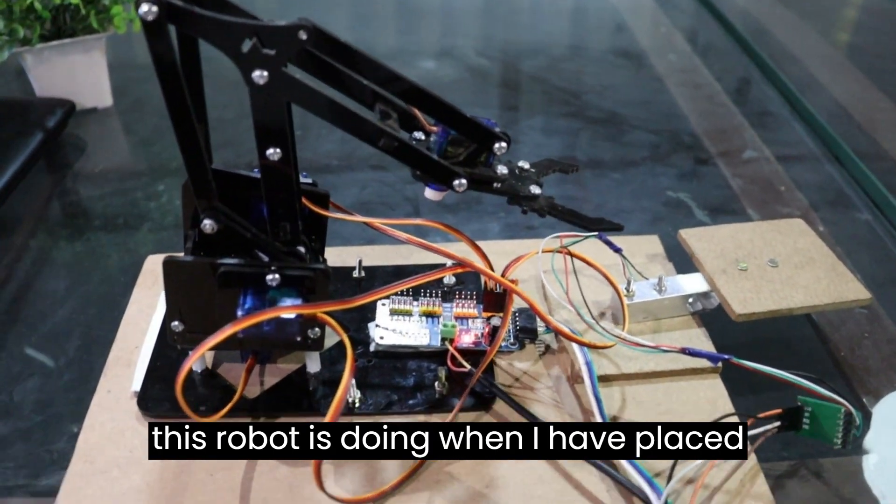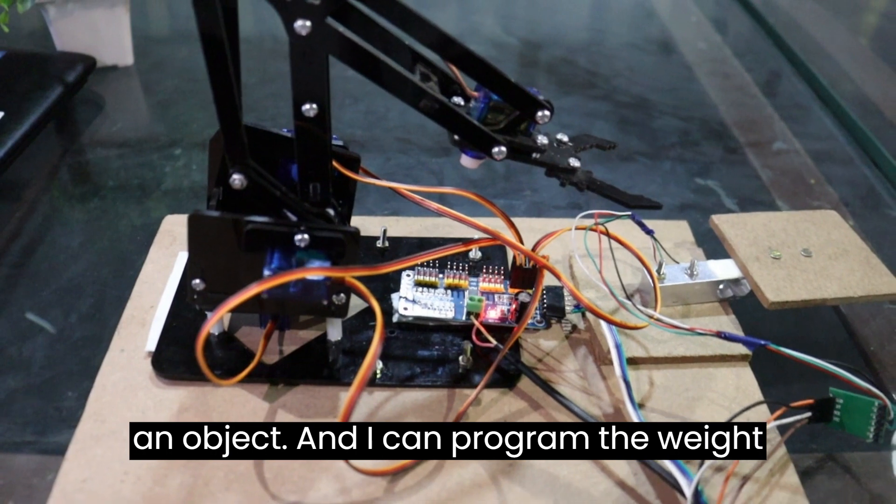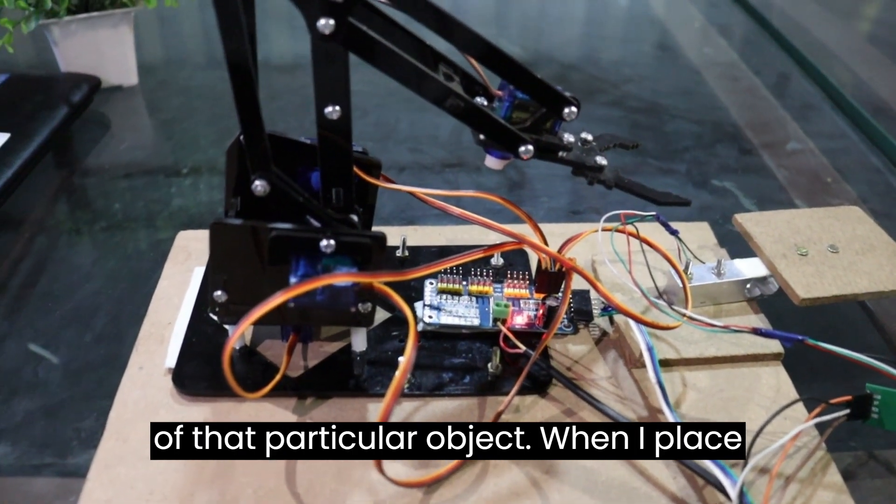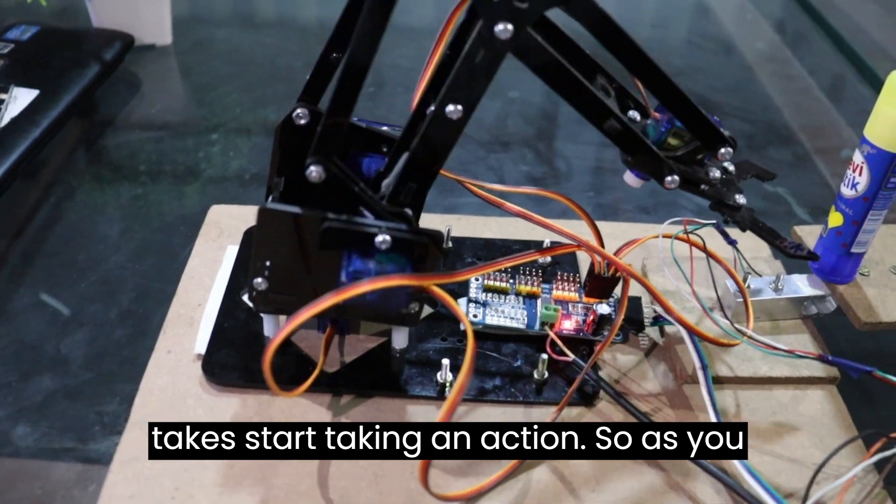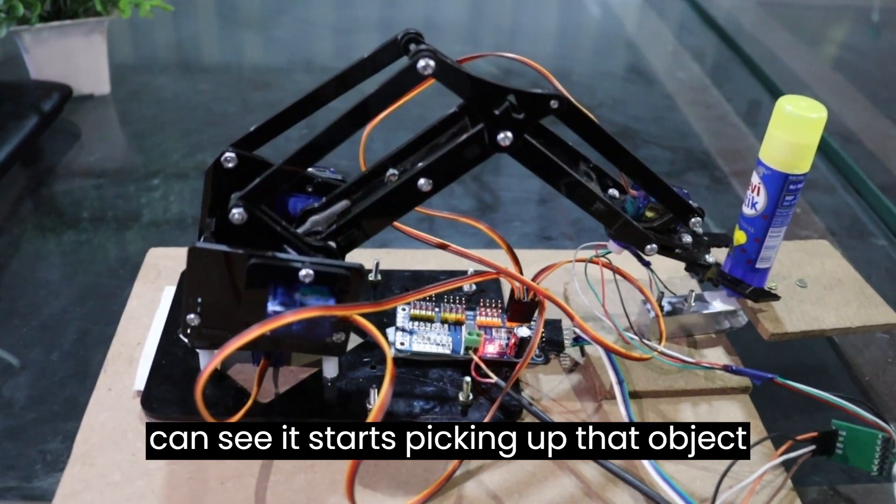What this robot basically does: when I place an object and program the weight of that particular object, it starts taking action. As you can see, it starts picking up that object and will throw that object away.